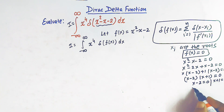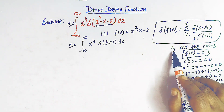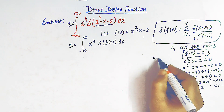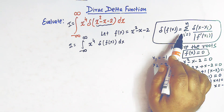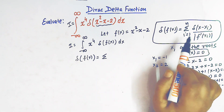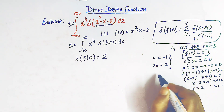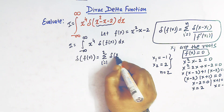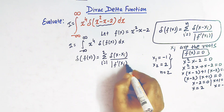So x minus 2 = 0 or x plus 1 = 0, giving x = 2 and x = minus 1. This equation has two roots, so our x_i's are 2 and minus 1. Let us take x1 = minus 1 and x2 = 2. Since we have only two roots, n = 2, so the summation runs from i = 1 to 2, giving delta of (x minus x_i) over the absolute value of f prime of x_i.